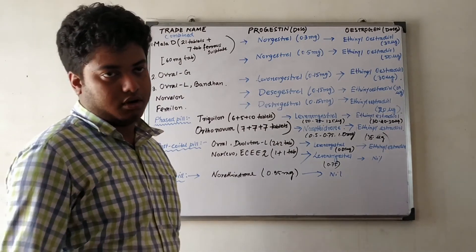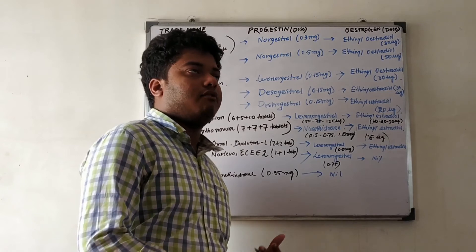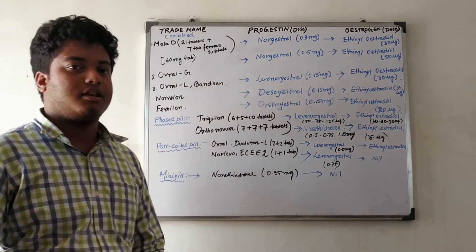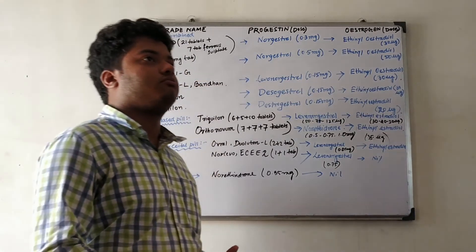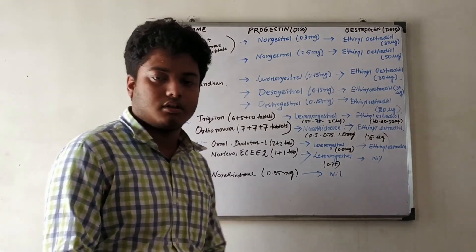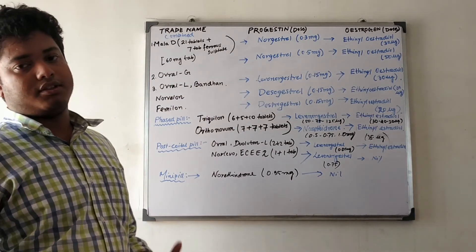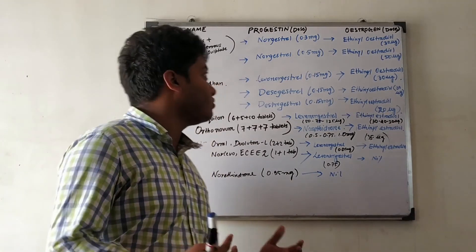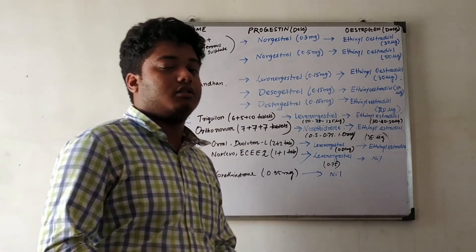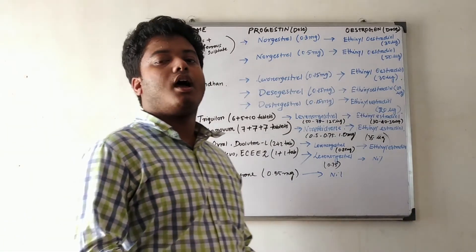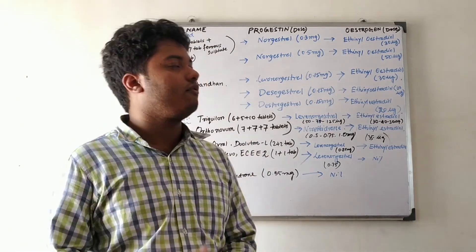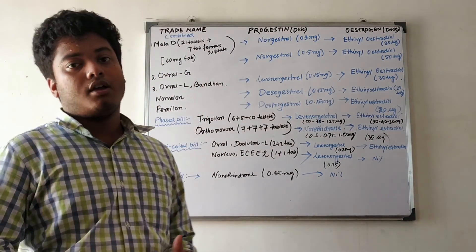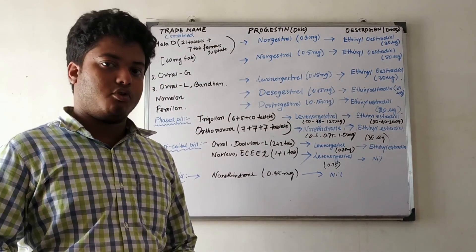These contraceptives interfere with our natural body hormonal system and have side effects such as abdominal pain and mastalgia. As much as possible, we should take these pills only in emergency conditions and should not interfere with the hormonal system unnecessarily. However, to control population, many people today are using these contraceptive pills. We have now completed our basic chapters on estrogen, progesterone, and hormonal contraceptives. In the next video, we will discuss immunosuppressant drugs and their classification in more detail. Thank you.